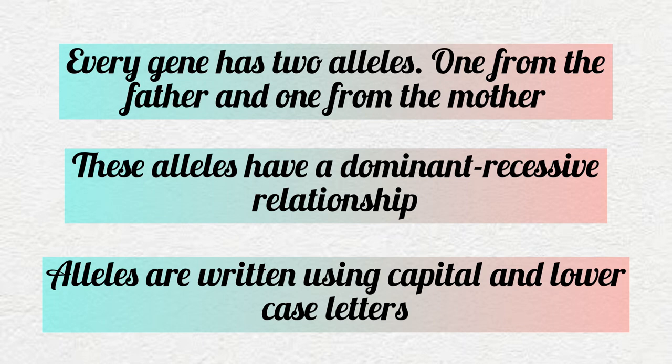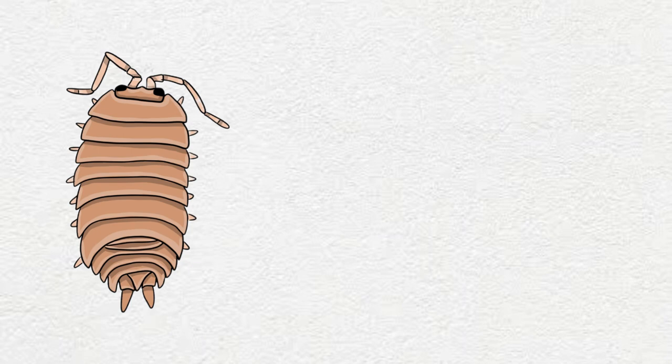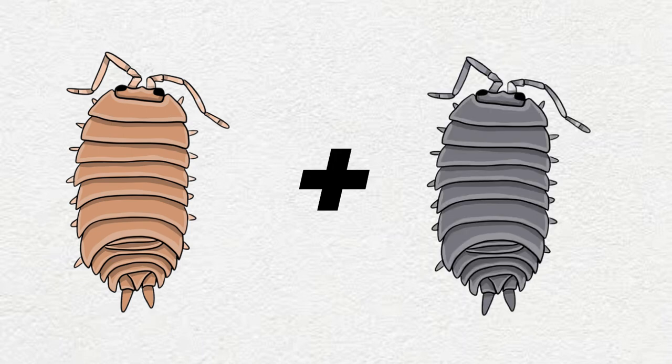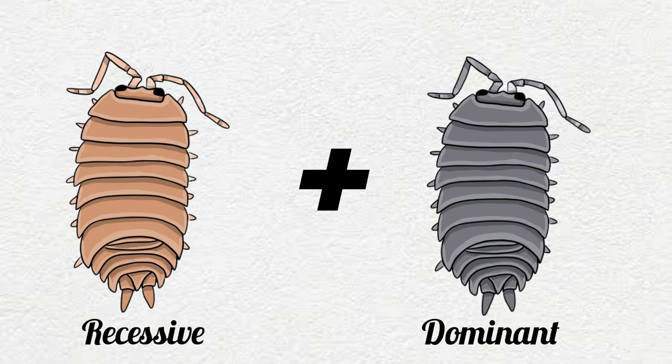Now let's do an example. Our goal by the end of this video is to create a colony full of orange Porcellio laevis. To do this, let's breed a common grey Porcellio laevis with an orange Porcellio laevis. The grey color is dominant and the orange is recessive.